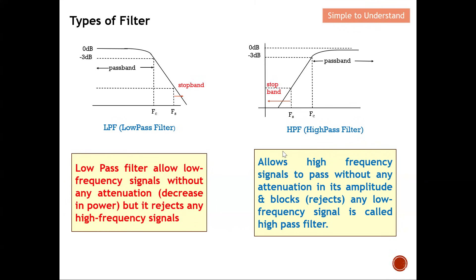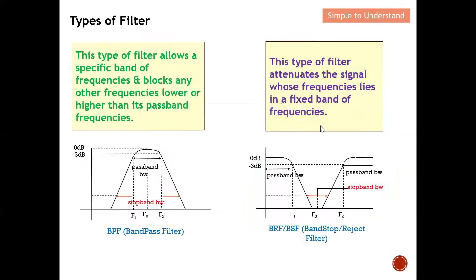The high pass filter is almost the reverse of the low pass filter — it only allows high frequency signals to pass without attenuation and blocks any low frequency signal. The passband is at high frequency and the stopband is at low frequency. Next is the band pass filter: as the name implies, it allows only a very specific band of frequencies to pass while blocking all others — both lower and upper frequencies outside the specified passband are rejected.